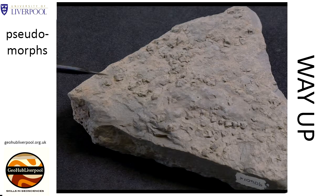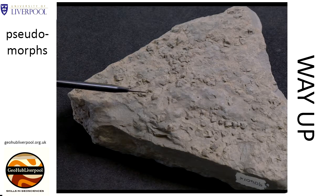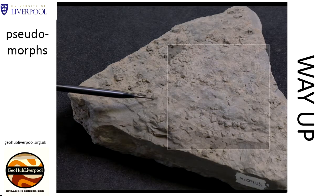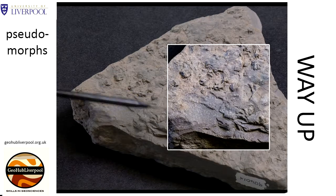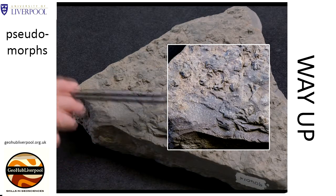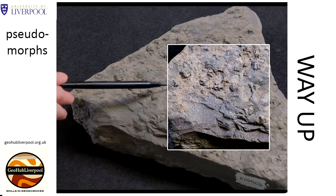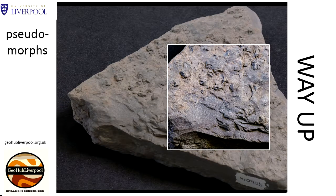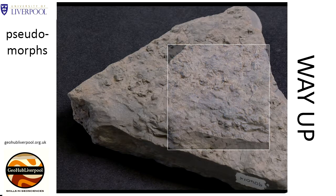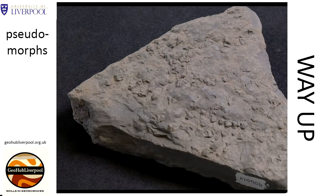The sedimentary structures in this sample are called salt pseudomorphs. These structures were formed on a sediment surface when halite crystals grew on a muddy surface as a result of evaporation. The halite crystals have cubic shapes, and some of the larger crystals show a pattern of steps on their faces, giving them an indented hopper form.